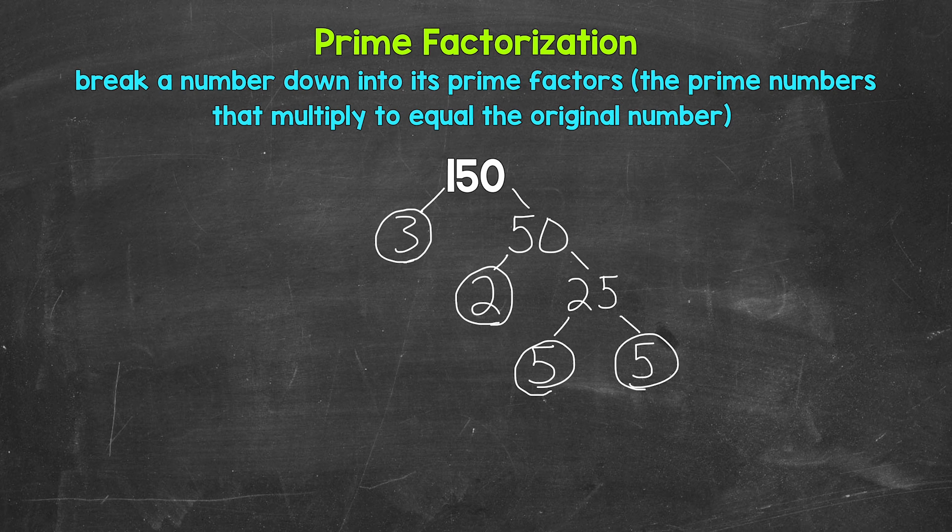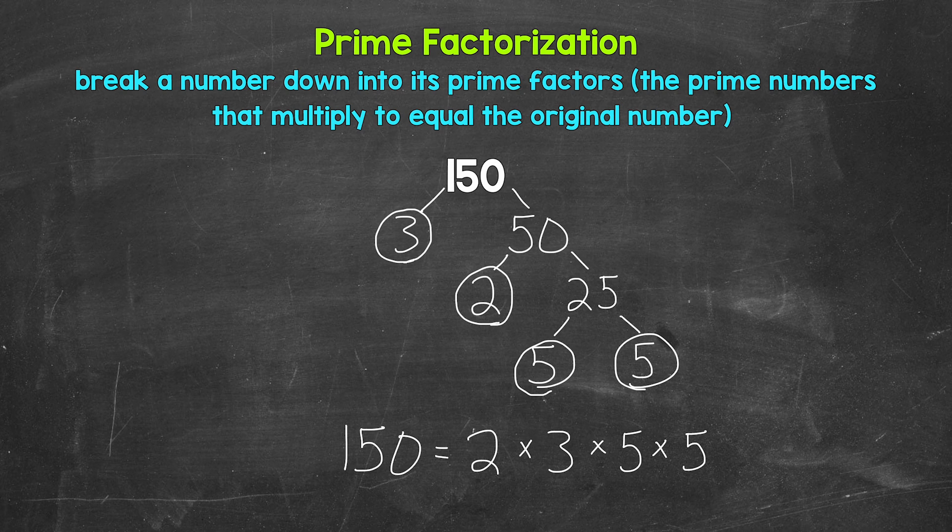And that's the prime factorization of 150. We don't have anything else that we can break down any further. We have all prime numbers. So let's write this out as 150 equals, and then we can write out our prime factors in order from least to greatest. And we are multiplying them. So we have 2 times 3 times 5 times 5. If we have the correct prime numbers, they will multiply to equal our original number.